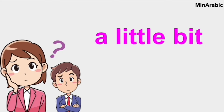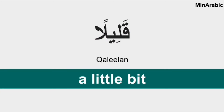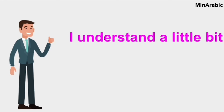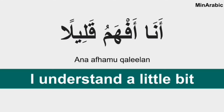How to say 'a little bit'? Try to memorize these words so we can use them later to build sentences. A little bit in Arabic is qaleelan. So how to say 'I understand a little bit'? It's ana afhamu qaleelan. Ana means I, afhamu means understand, and qaleelan means a little bit. Ana afhamu qaleelan. Good.